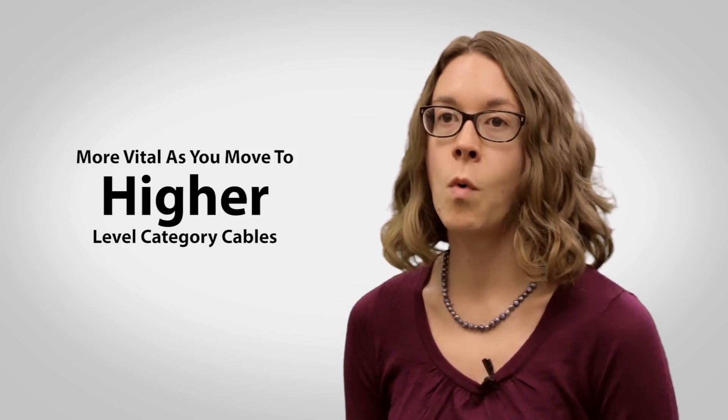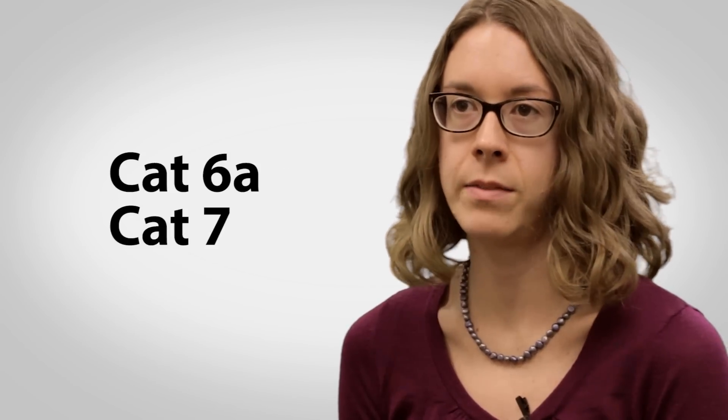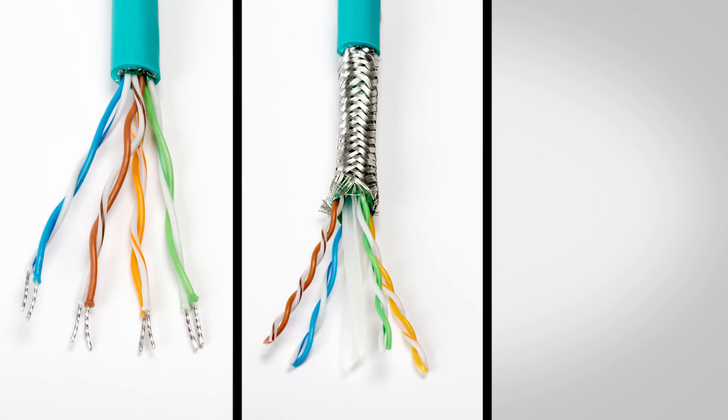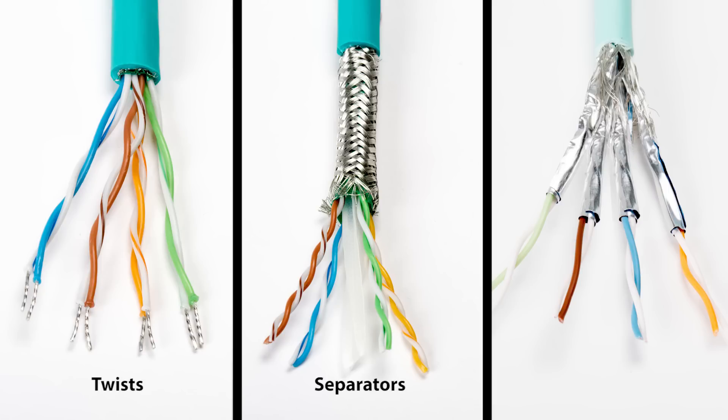This becomes even more vital as you move to higher level category cables, for instance CAT 6A or CAT 7. The pairs in these cables are further protected from one another by the amount of twists per pair, physical separators inside the cable, or even foil shielded pairs.